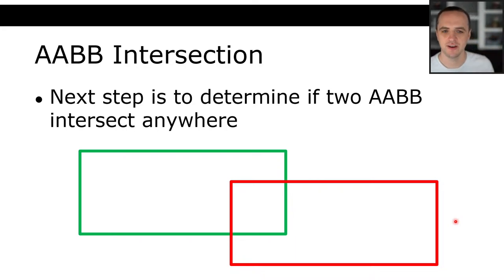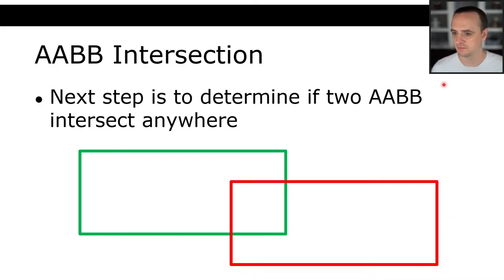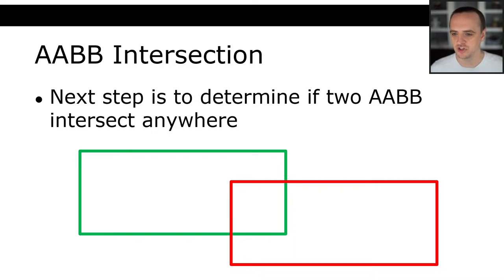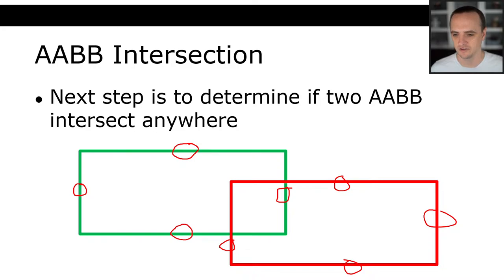The next most complicated thing we can do is determine if two axis-aligned bounding boxes intersect anywhere. You might naively think that in order to detect if two AABBs intersect, two of their line segments have to be intersecting. That means checking each of the four line segments of one box against all four of the other, potentially requiring 16 calculations to see whether or not two AABBs intersect.